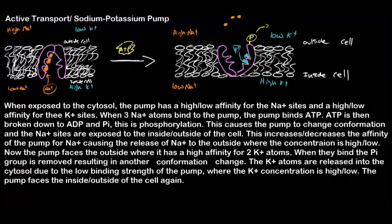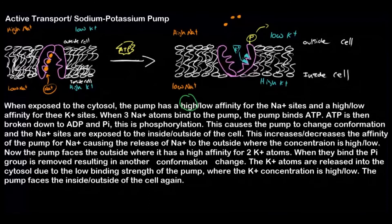The pump has a high affinity for the sodium sites. When our sodium-potassium pump is facing the inside of our cell, the conformation of the protein has a high affinity for sodium, meaning sodium will be easily attracted to the protein. And it will have a low affinity for the potassium sites in that conformation — low affinity for potassium but high affinity for sodium when facing the inside of the cell.